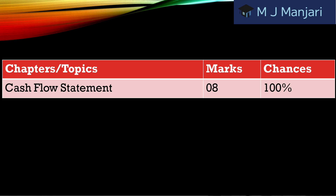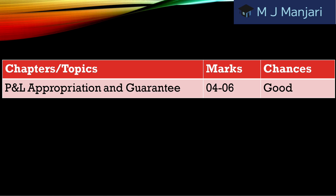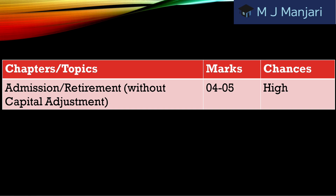The first topic is cash flow statement. It carries 8 marks and its chances are 100%. The second topic is P&L Appropriation and Guarantee. It carries 4 to 6 marks and chances are very good. The third topic is admission and retirement without capital adjustment. Its marks are 4 to 5 and chances are high.